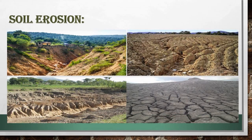Now let us study about soil erosion. Soil erosion is a process in which the top fertile layer of soil is lost. Due to soil erosion, the soil becomes less fertile. The top layer of soil is very light and is easily carried away by wind and water. We can define soil erosion as the removal of topsoil by natural forces.